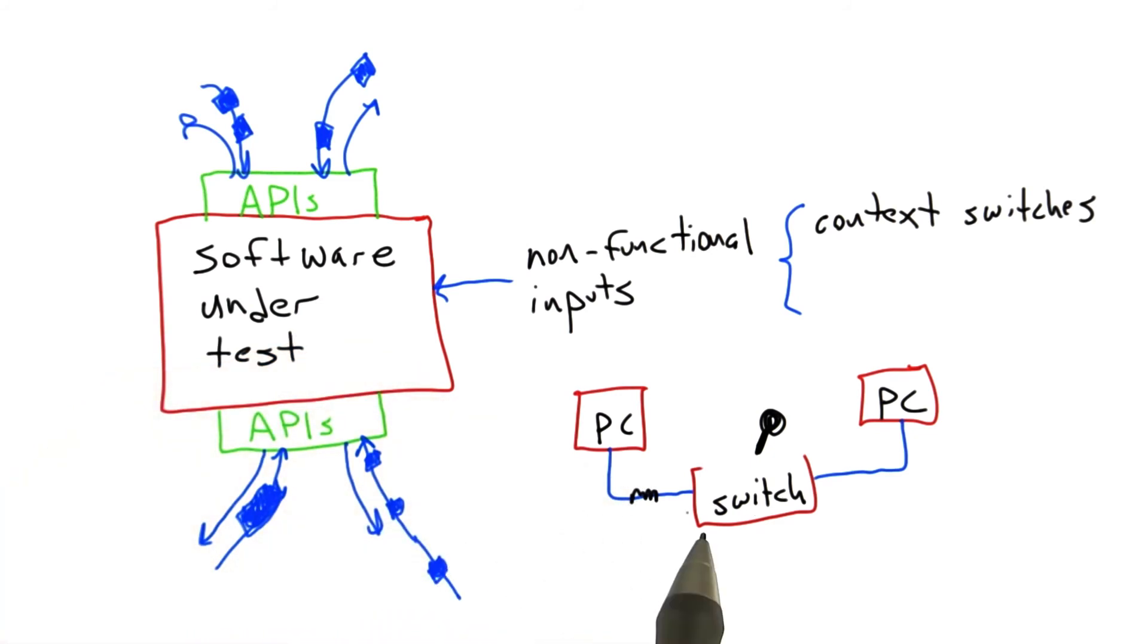What I like about this example is we were able to access, using this very crude mechanism of running a key across contacts, a deep level of the system and introduce errors that we weren't able to introduce, at least conveniently, at any other level of the software stack.